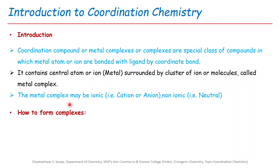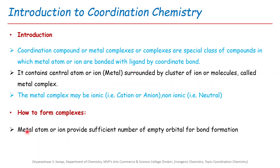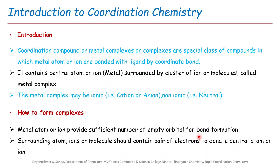Let us see how metal complexes form, or what the basic requirements are to form metal complexes. There are two required conditions for the formation of metal complexes. First, the metal atom or ion must provide a sufficient number of empty orbitals for the formation of a coordinate bond. Second, the surrounding atoms, ions, or molecules should contain a pair of electrons to donate to the central atom or ion — that is, at least one lone pair of electrons.